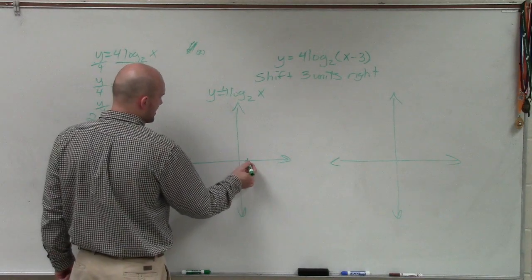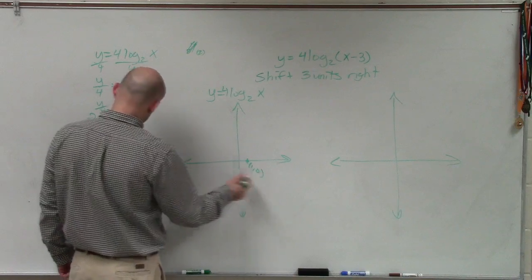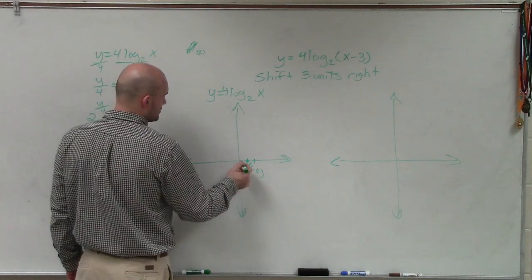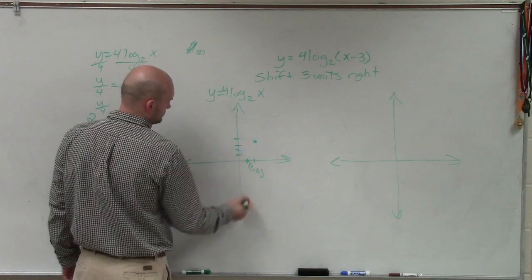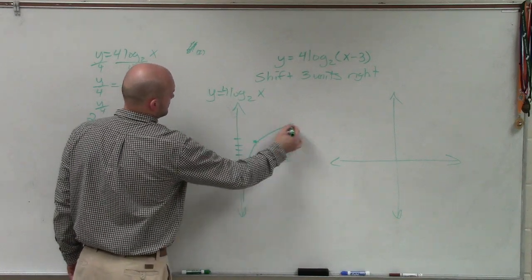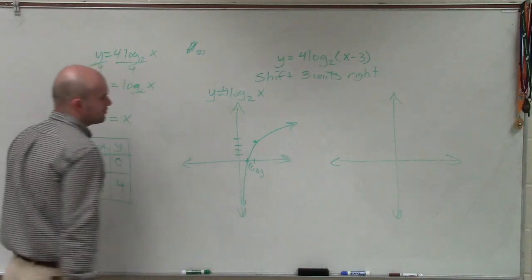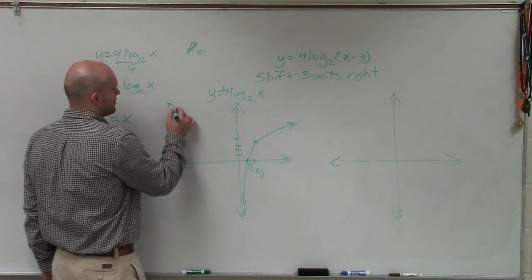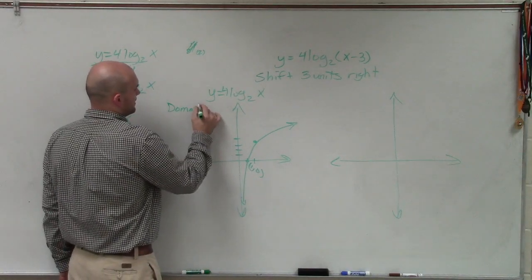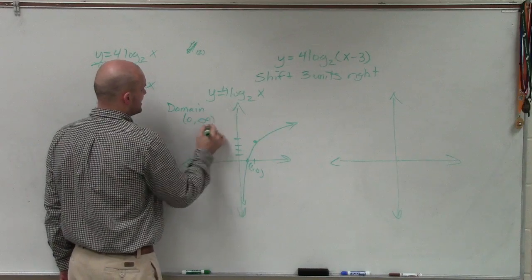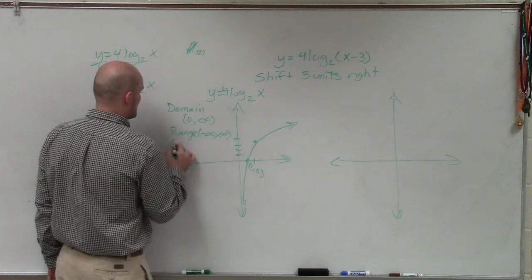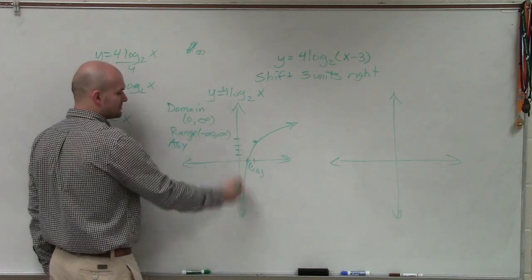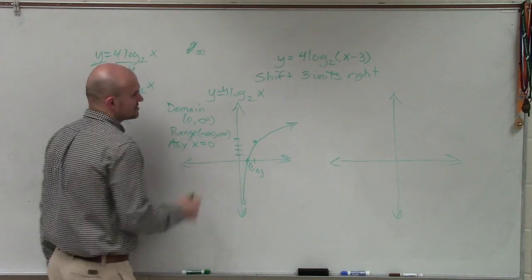So now I can plot those two points. So I have 1 comma 0. And then I have 2 comma 4. So you can see my exponential graph is going to look something like that, where my domain is still going to be from 0 to infinity. My range is going to be from negative infinity to infinity. And my asymptote, where my graph is going to approach, is still going to be at x equals 0.